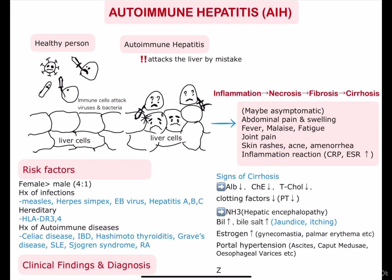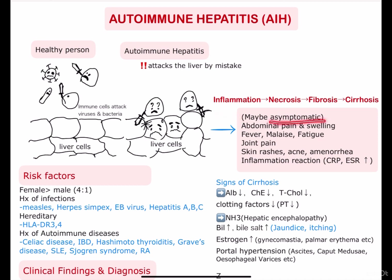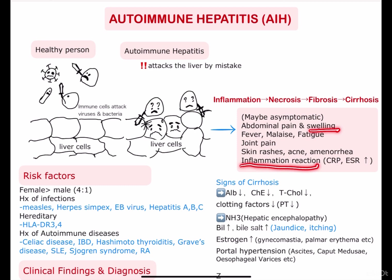As with most other autoimmune diseases, autoimmune hepatitis is also more commonly seen in females. The symptoms may vary from person to person, and in some people it might be asymptomatic, and in some people you can see very unspecific symptoms such as fever, malaise, and fatigue. As there is inflammation going on in your liver, you may see upper right quadrant abdominal pain and swelling, as well as inflammation markers such as an increase in CRP and ESR.